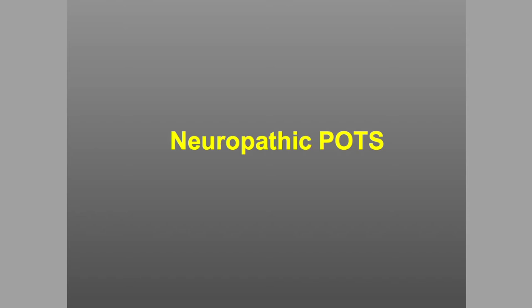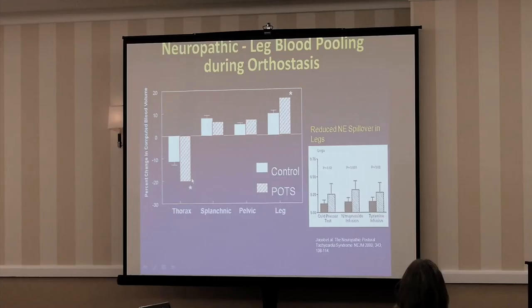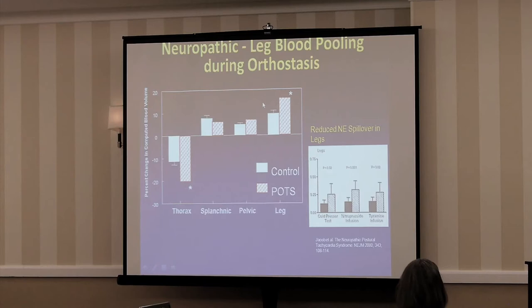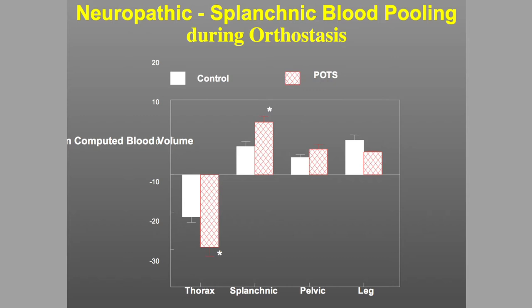Neuropathic POTS may make more sense when you see changes in blood volume in four compartments. In a healthy control versus a POTS patient with excess leg pooling — a variant of neuropathic POTS — the decrease in central blood and increase in blood in the legs is larger in the POTS patient. Norepinephrine spillover experiments showed they were relatively denervated in their legs — they didn't have as much norepinephrine. A very similar pattern was seen in patients who had pooling in the gut circulation, which I would now classify as a form of neuropathic POTS — partial denervation.